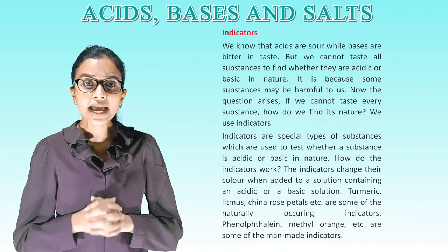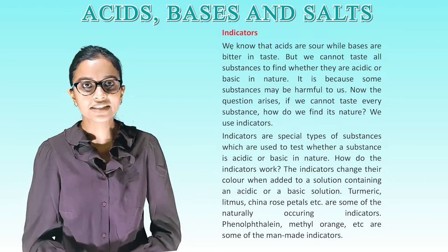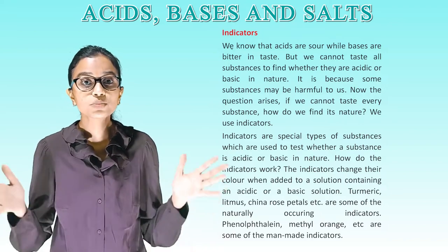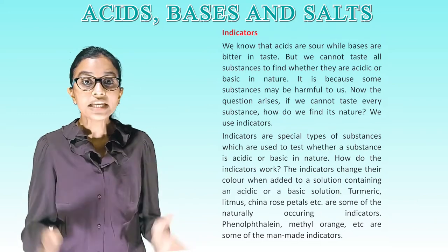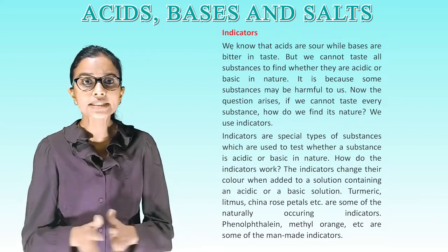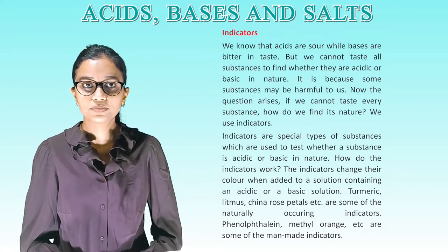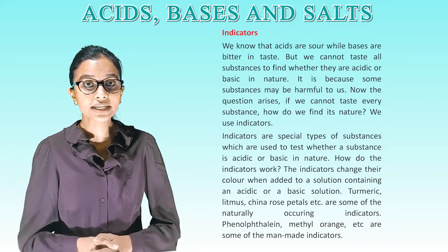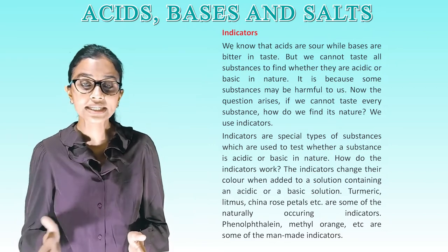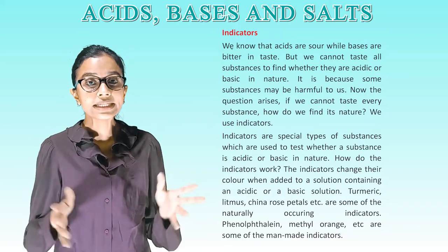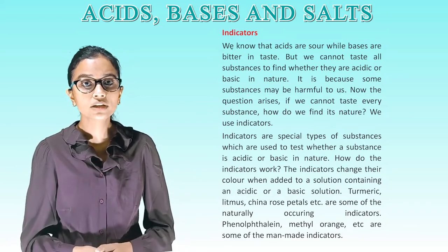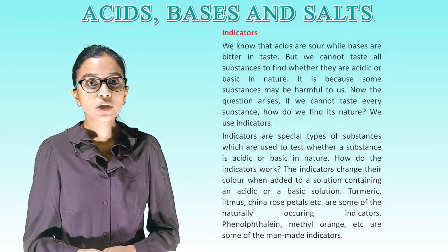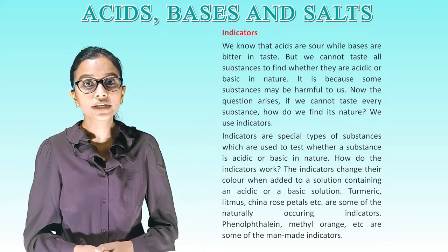Indicators. We know that acids are sour while bases are bitter in taste. But we cannot taste all substances to find whether they are acidic or basic in nature because some substances may be harmful to us. If we cannot taste every substance, how do we define its nature? We use indicators. Indicators are special types of substances used to test whether a substance is acidic or basic in nature. The indicators change their color when added to a solution containing an acid or a base. Turmeric, litmus, china rose petals etc. are some naturally occurring indicators.